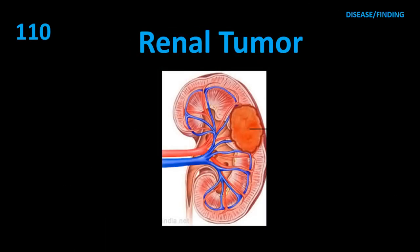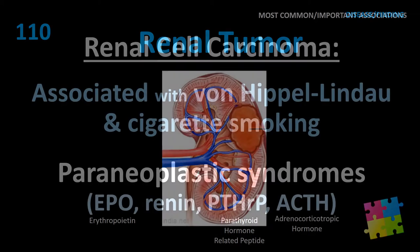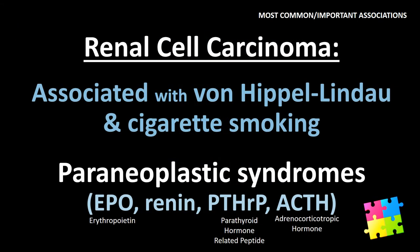Item 110: Renal tumor — renal cell carcinoma. Associated with von Hippel-Lindau and cigarette smoking. Paraneoplastic syndromes include EPO, renin, PTH-related peptide, and ACTH.